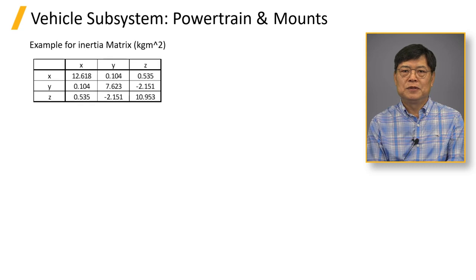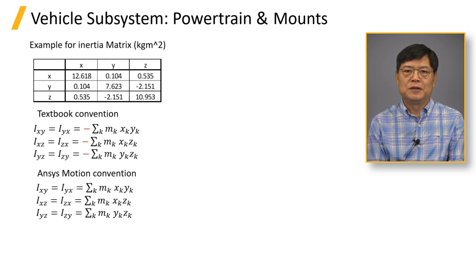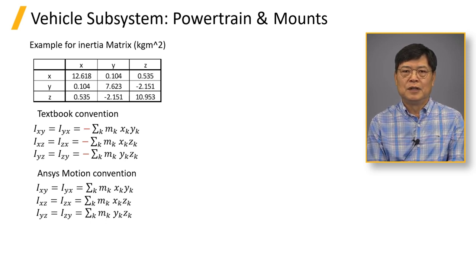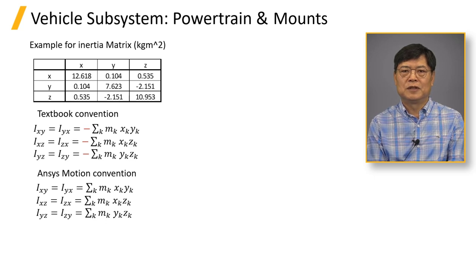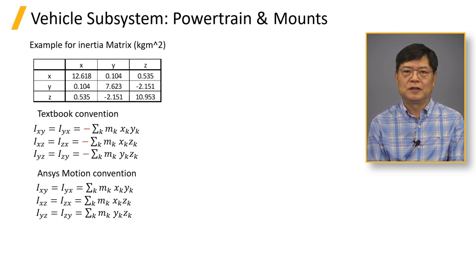The table shows an example of a powertrain inertia matrix. Users should be careful, as ANSYS Motion has a different sign convention than the textbook convention. The product of inertia from a physical test is defined using the textbook convention. The sign of the product of inertia should be carefully reviewed; otherwise, the principal axis of the inertia matrix would be in the opposite direction.